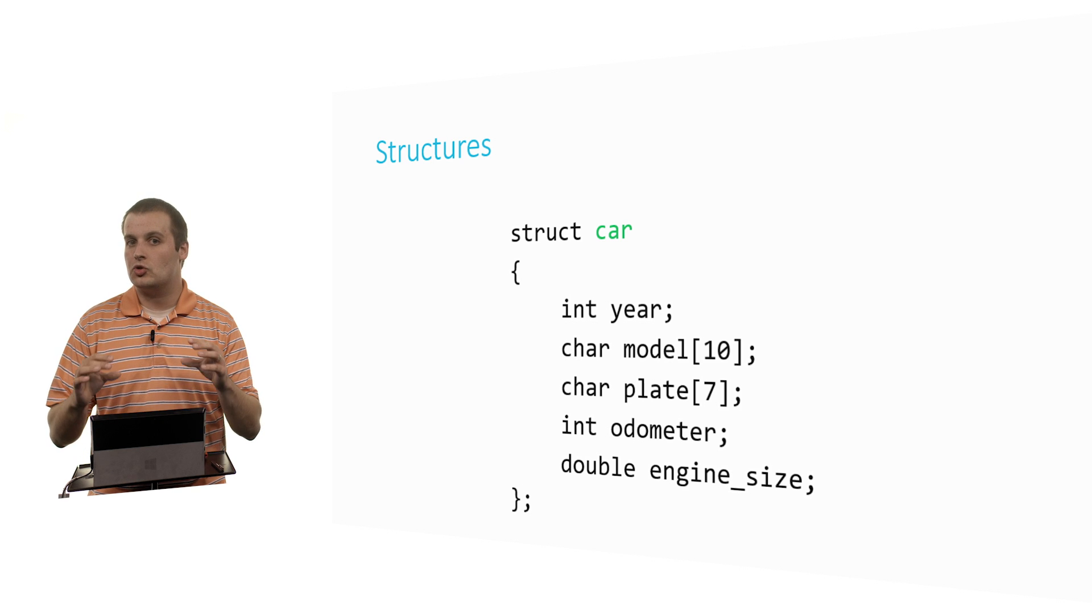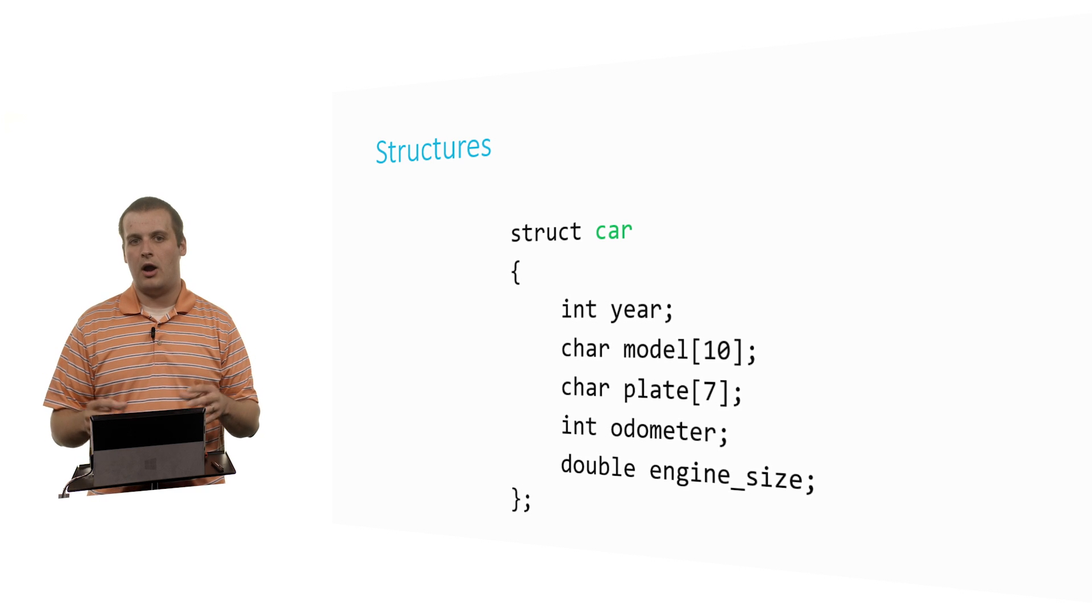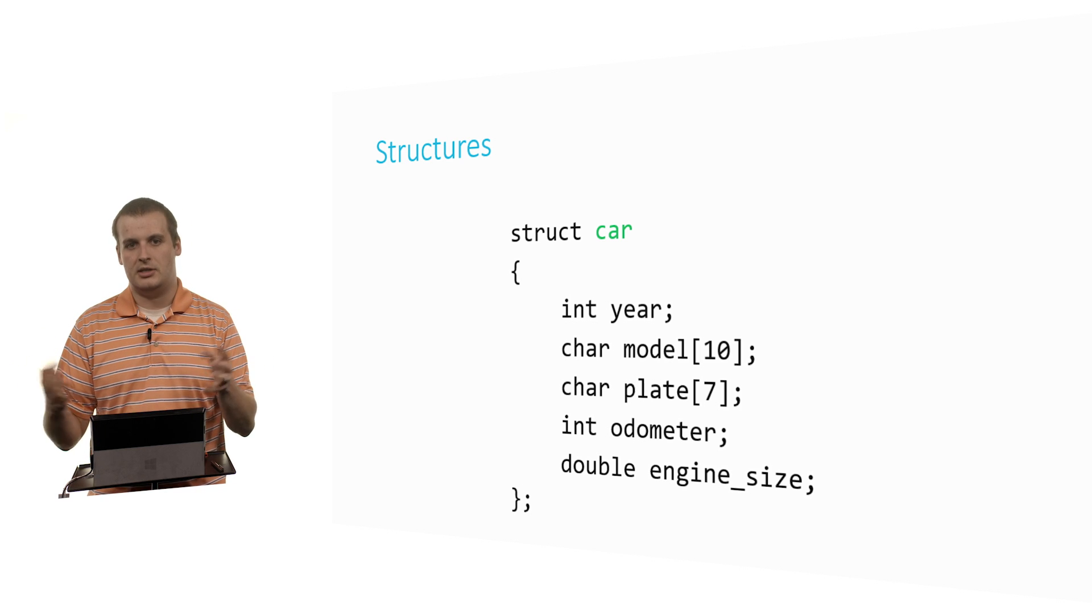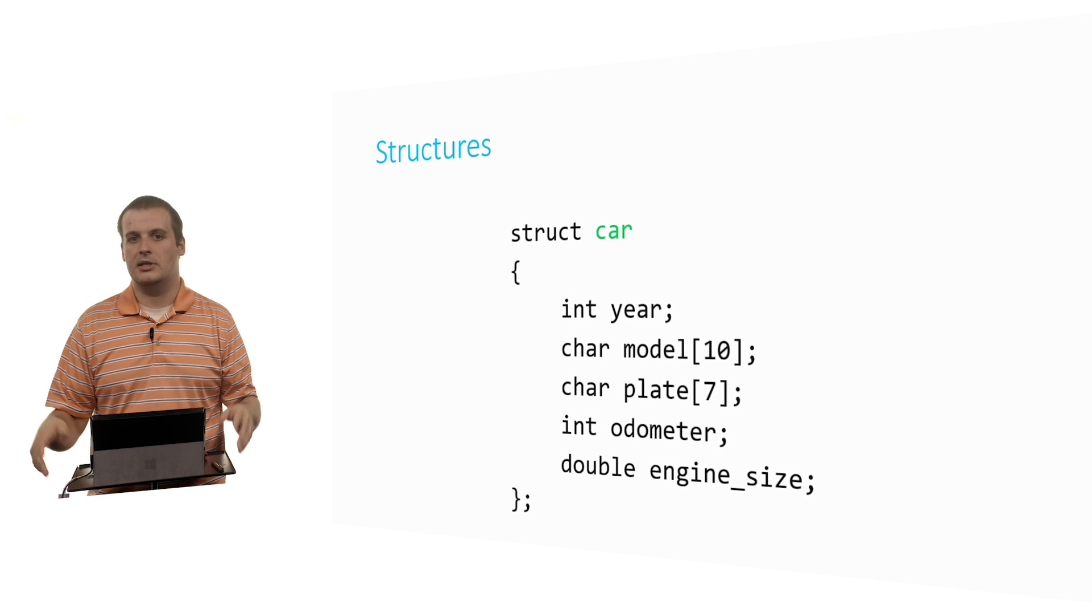Car is just the name of the structure. Again, the data type here is going to be struct car, not just car. If you create multiple structs in the same program, you need to distinguish between struct and struct. So struct car, I might also have struct student, for example, in the same program.